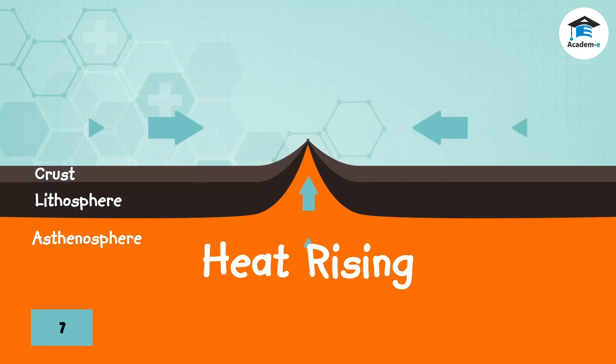Some of the hot mantle materials spread sideways beneath the lithosphere and cool off. The mantle materials that cool become dense and sink deeper into the core. As they get near the core, the sinking materials heat up again and the cycle continues.